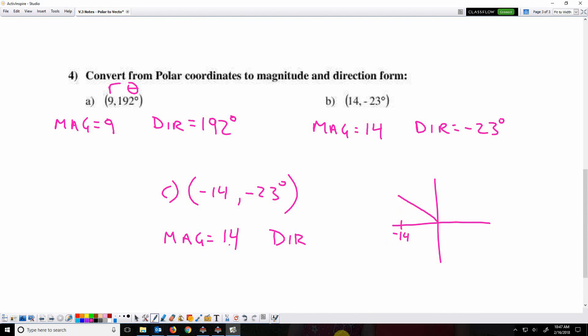And negative 23 degrees means clockwise, 23 degrees. So that's about what the vector would look like. But if we write positive 14 for the magnitude, usually you're going to want to go this way, to the right.